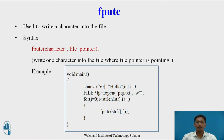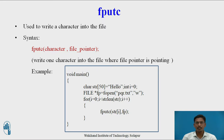This is a program for writing a string character by character into the file. char str[50] contains "hello" as a string. FILE *fp = fopen("pqr.txt", "w") opens the file in write mode. A for loop runs from i=0 while i < strlen(str), and fputc(str[i], fp) writes each character of the string one by one into the file where fp is pointing.